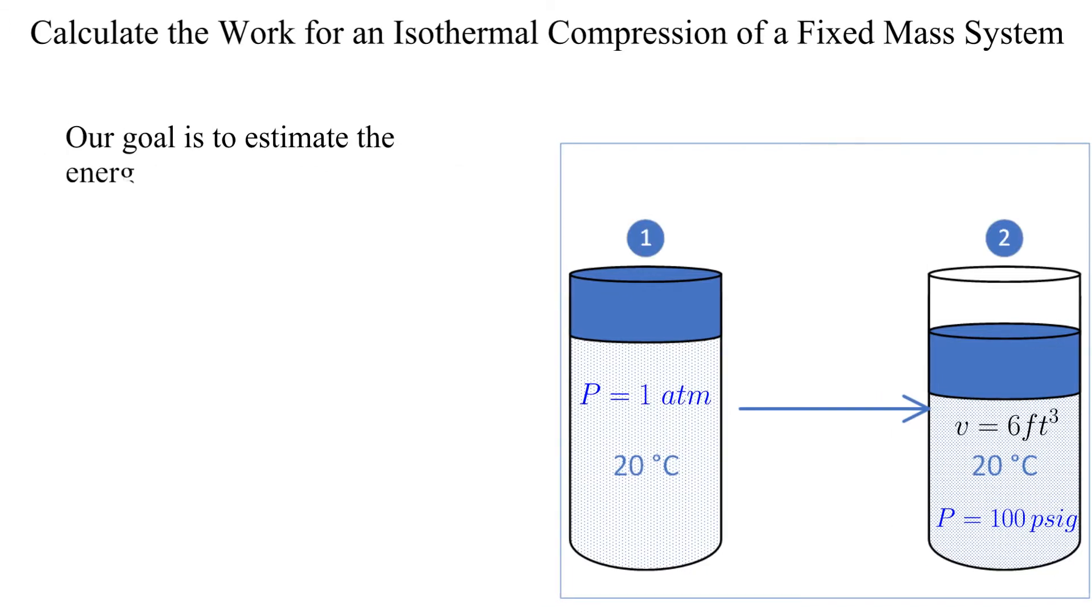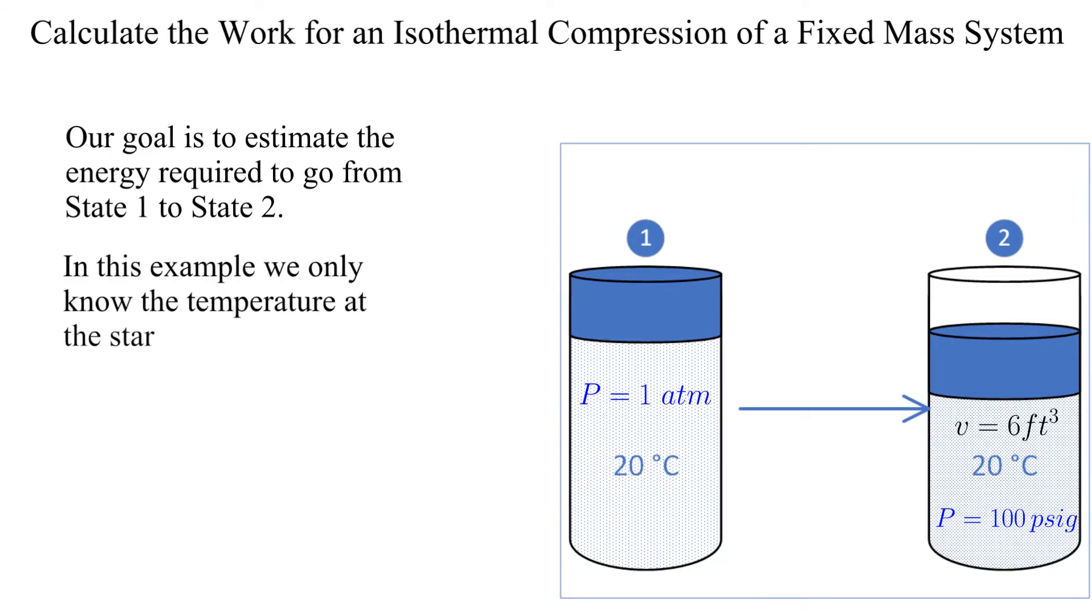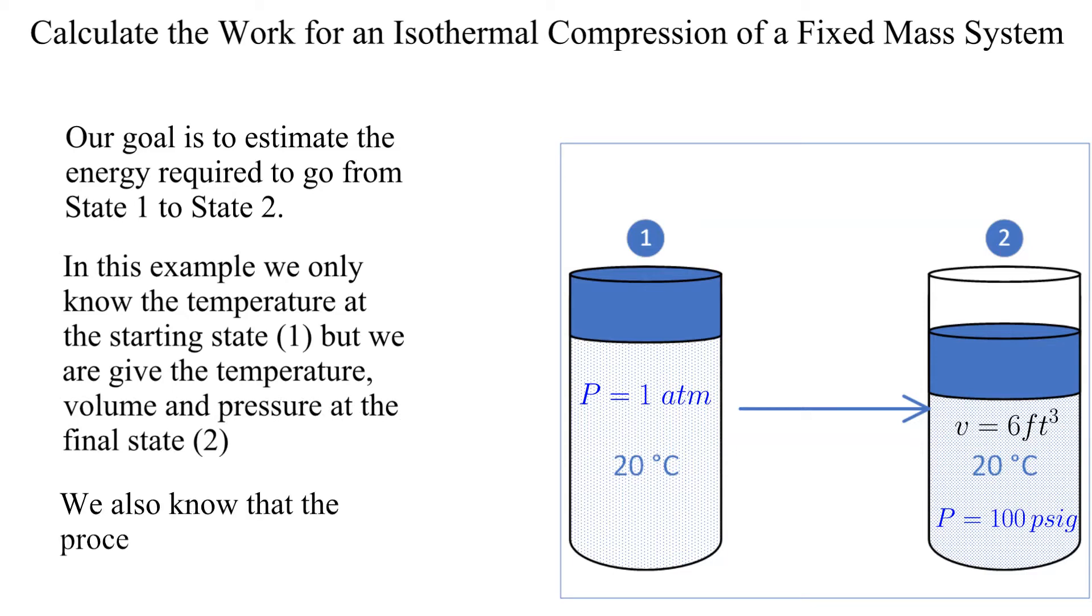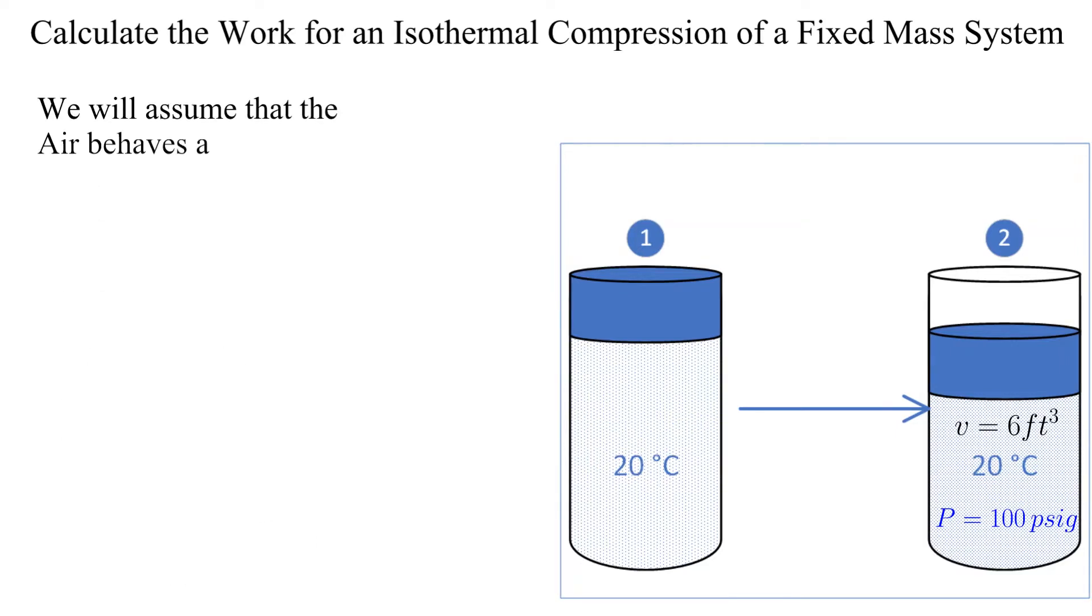We will define state 1 to be the initial state at a pressure of one atmosphere or 14.7 psia. State 2 is the final compressed state at 100 psig or 114.7 psia. We will treat the air as an ideal gas.